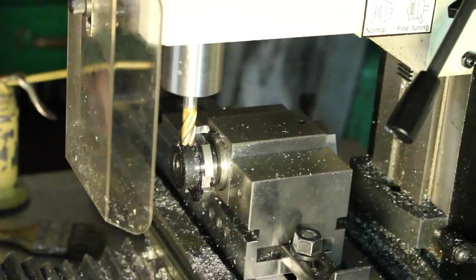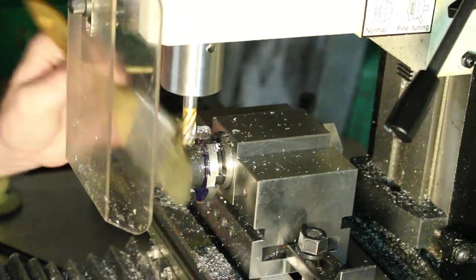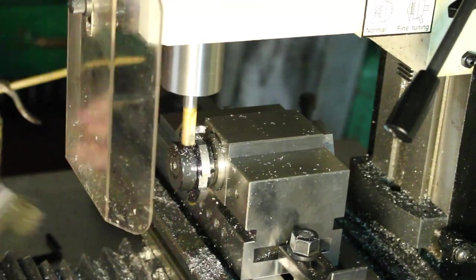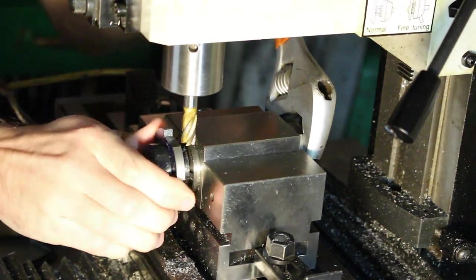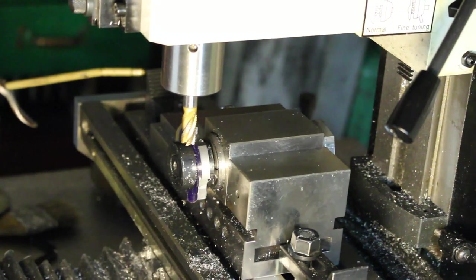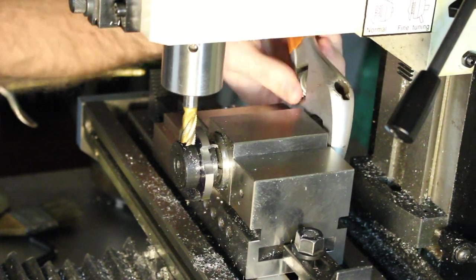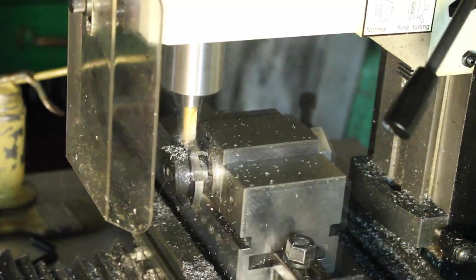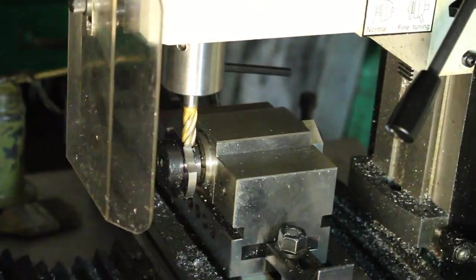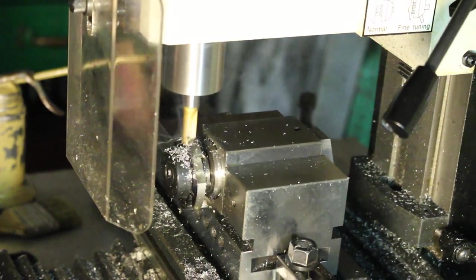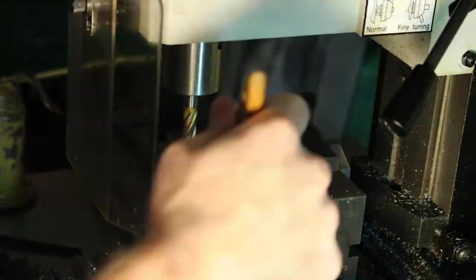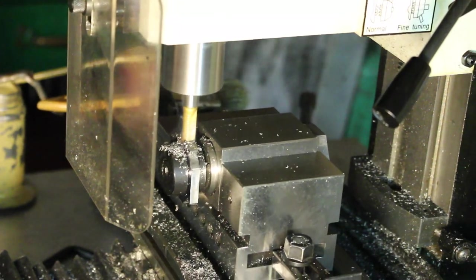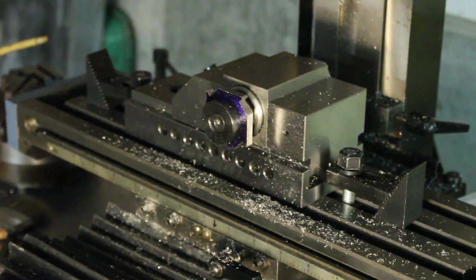The next series of cuts will remove the waste stock in front of each tooth face. The last series of cuts will form the bulk of the relief behind each cutting tooth. The rough cutter is now formed, and the remaining work will be done by hand.